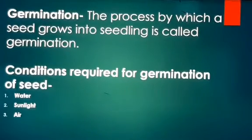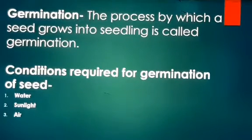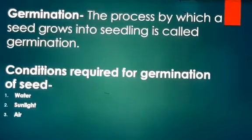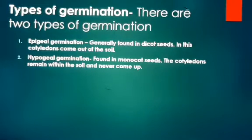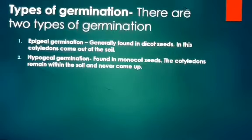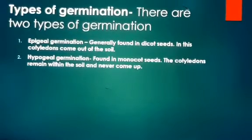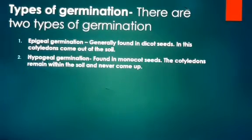There is another condition required for germination. For the germination of a seed, the optimum temperature required is in the range of 15 degrees Celsius to 35 degrees Celsius. Different types of seeds — monocot and dicot — differ in their structure, and different types of seeds can undergo germination in different ways. The types of seed germination are epigeal germination and hypogeal germination.